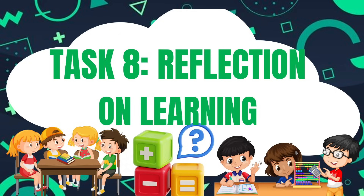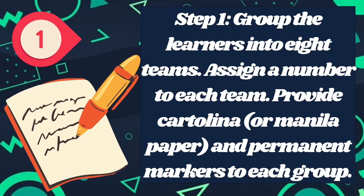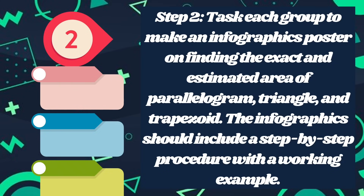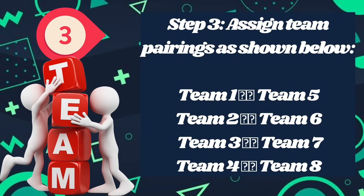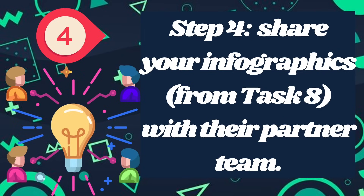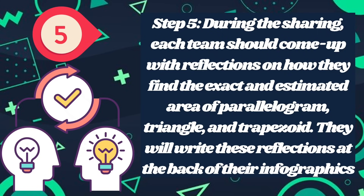And for your reflection on learning, group the learners for a group activity. You will be given a cartolina and permanent marker. Your task is to make an infographics poster on finding the exact and estimated area of the parallelogram, triangle, and trapezoid. The infographics should include a step-by-step procedure with a working example. You will be given assigned teams and pairings. Share your infographics with your partner or team. During the sharing, reflect on how you find the exact and estimated area, and write a reflection at the back of your infographics.